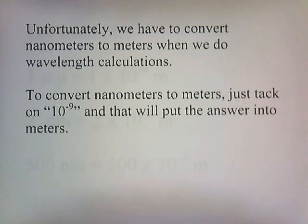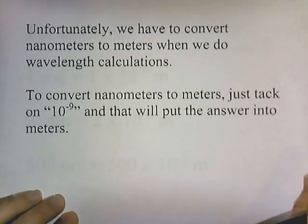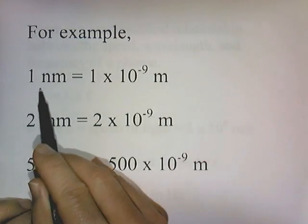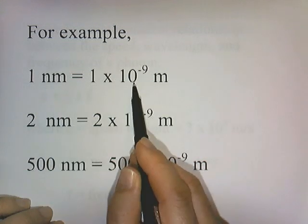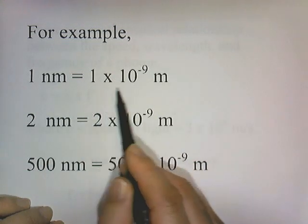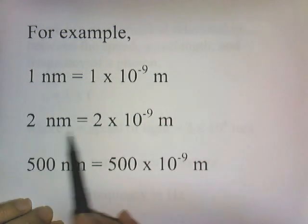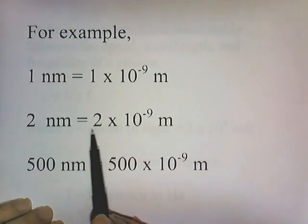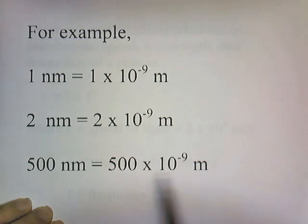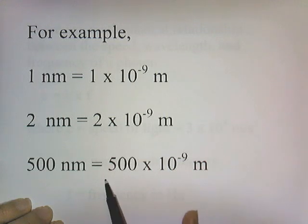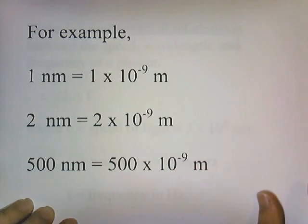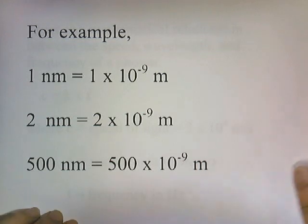To convert nanometers to meters, just slap on times 10 to the negative 9th. For example, 1 nanometer is 1 times 10 to the negative 9th meters — a nanometer is a billionth of a meter. 2 nanometers is 2 times 10 to the negative 9th meters. And 500 nanometers is 500 times 10 to the negative 9th meters. Just tack on times 10 to the negative 9th.